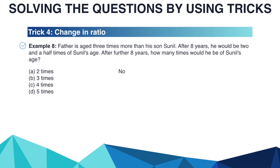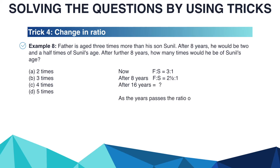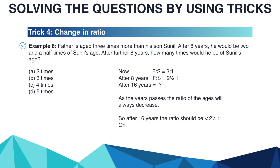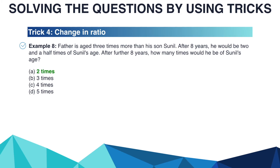After 8 years, (F+8) to (S+8) equals 2.5 to 1. After 16 years, we need to find the ratio. As years pass, the ratio of ages always decreases. So after 16 years, the ratio should be less than 2.5 to 1. Only option A (2 times) is less than 2.5. So the right answer is A: 2 times.